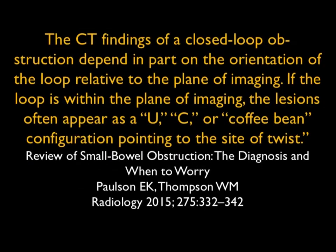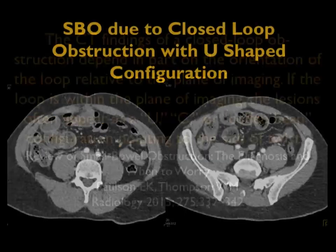An article by Paulson notes that the finding of a closed-loop obstruction depends in part on the orientation of the loop relative to the plane. If it's within the plane of imaging, it's a U, C, or coffee bean configuration. Some of that depends on how well you do the reconstructions.